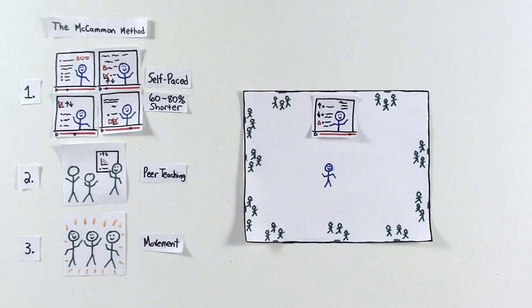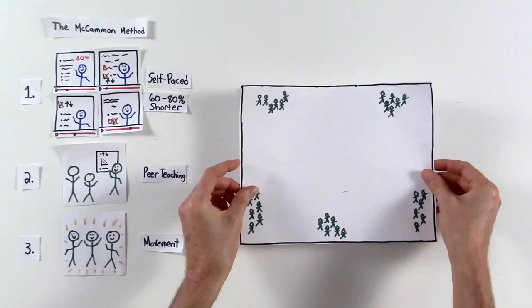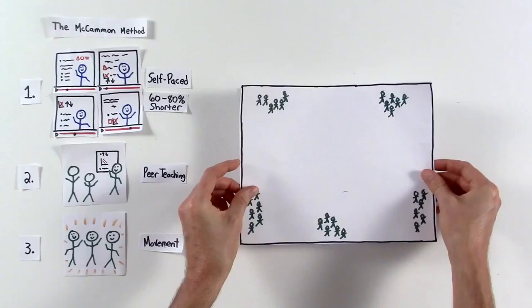When the students are ready, I play the first three minutes of the video and then give them another three minutes to prepare their lesson. Then I have each group teach their new 20-second lesson to another group.